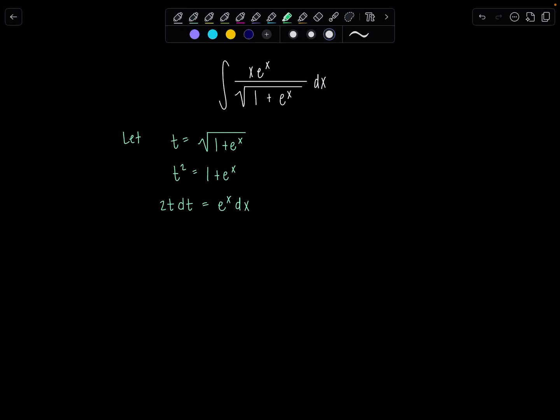So 2t dt is equal to e to the x dx. So let's see, is everything accounted for? So e to the x dx in the numerator, all of that's going to be 2t dt. And then down here, the square root of 1 plus e to the x, that's t.